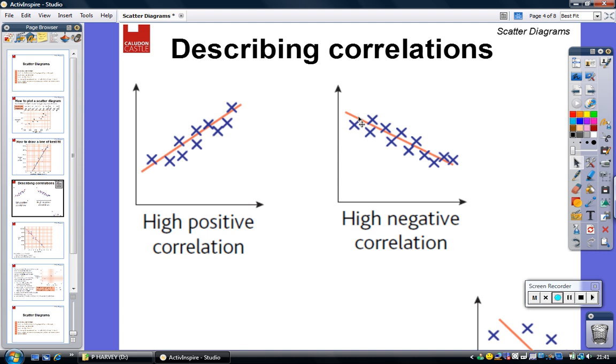A high negative correlation, again, the points are very close to the line, but instead of the line increasing, going in an upward direction as it moves along the x-axis, this time it's going down, and we call this a negative correlation.